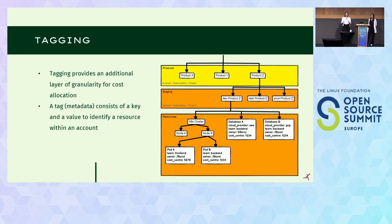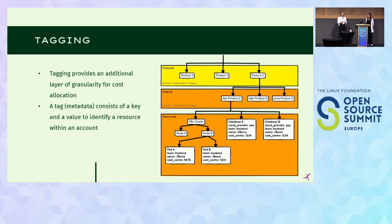Looking at our example, we've added another layer: the resources. If you ask yourself when to tag versus when to create an extra account — on the right side of the example you can see Database A and Database B with the tag 'owner.' You wouldn't create extra accounts for all the different owners that exist, because then you'd have way too many accounts. Similarly for Pod A and Pod B with the tag 'team' — front-end and back-end — you wouldn't create extra accounts for those services either. You'd just tag them, so in the end you know which team is producing which costs within an account.